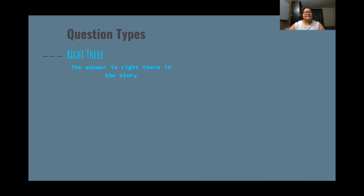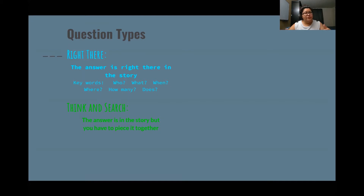When we think about anything we're reading, we ask ourselves different types of questions. The first type is right there — that is a question where the answer is right there in the story; you don't have to go any further than just looking. Keywords for this type include who, what, when, where, how many, and does. Then we have think and search, where the answers are in the story but you have to piece it together. Keywords include find an example, summarize, compare and contrast, how did, and retell.